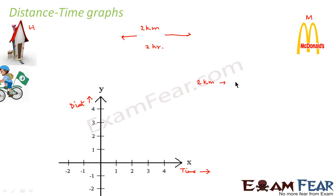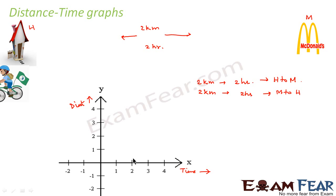Using the data, we see that Ronnie traveled 2 kilometers in the first 2 hours while going from home to McDonald's, and he traveled 2 kilometers again in another 2 hours while coming back from McDonald's to home. So 2 kilometers in 2 hours — this is 1 hour, 2 hours, 3 hours, 4 hours, expressed in hours.